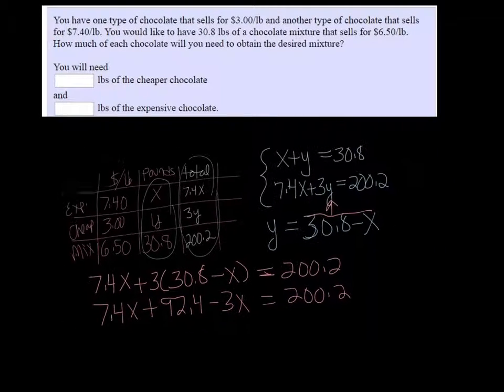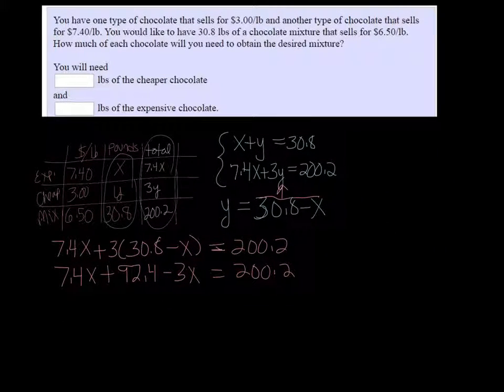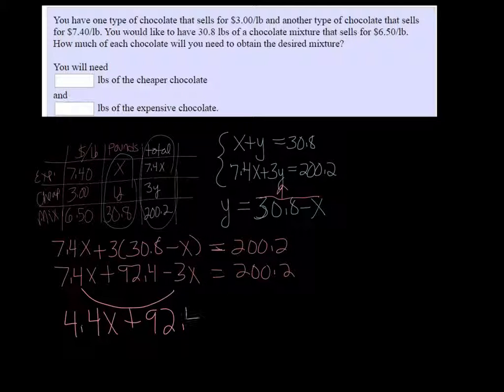Running out of space, so like that. 7.4 minus 3X is going to give us 4.4X plus 92.4 equals 200.2.